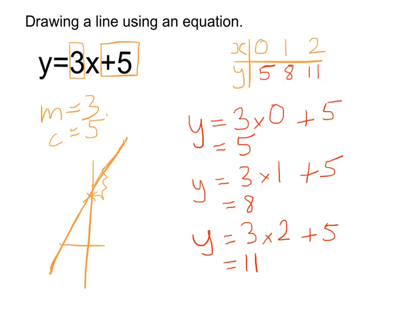So therefore, we now have 3 coordinates that we can use. We have, when x is 0, y is 5. So we can plot 0, 5.